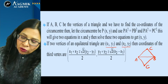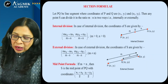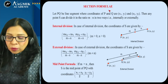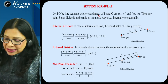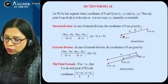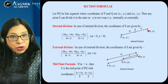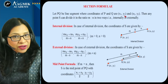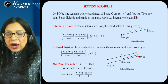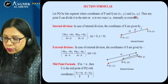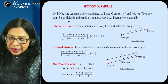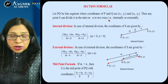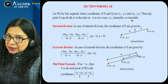Now let us talk about the section formula. If PQ is a line segment where P has coordinates (x1, y1) and Q has coordinates (x2, y2), then any point S can divide it in the ratio m:n in two ways — internally and externally.